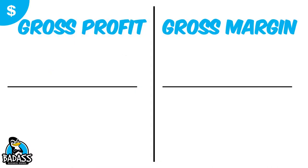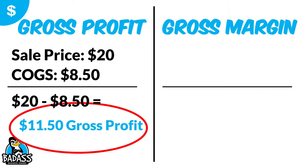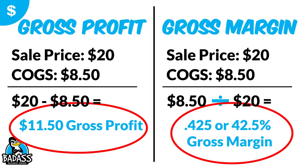Now let's take a look at them side by side. Say you have an item with a sales price of $20 and the cost of goods is $8.50. To figure out the gross profit, we take $20 minus $8.50, which tells us our gross profit is $11.50. Now, if we need to figure out our gross margin, we use the same numbers but a different calculation: we take $8.50 divided by $20, and that tells us our gross margin is 42.5%. So for one item, you get a dollar amount of $11.50 for gross profit and a gross margin of 42.5%.